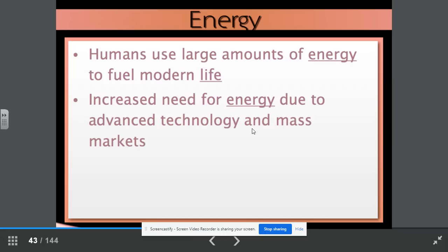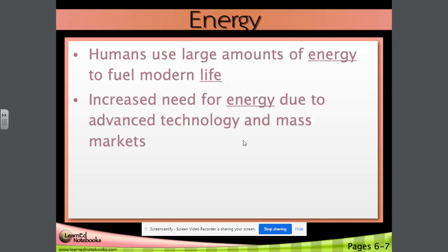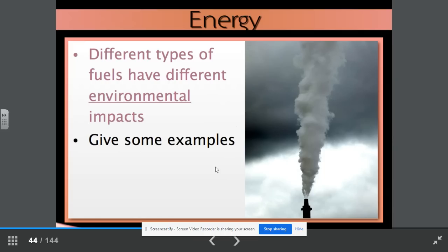Humans use large amounts of energy to fuel our modern life and our conveniences. This increased need for energy due to advanced technology and mass markets is something we have discussed a lot in class. Different types of fuels have different environmental impacts. Think of some examples. We talked about them in class. Renewable energy versus non-renewable energy. What impact do they have on the environment? How reliable are they?